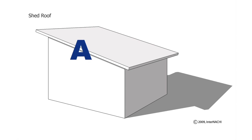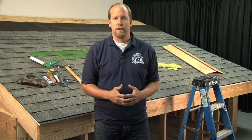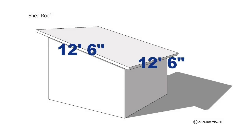Simply measure the length of A, then measure the length of B. The area of the shed roof is A times B, which is, in this example, twelve and a half feet times twelve and a half feet, which is 156 and a quarter square feet for the total square footage of the shed roof.